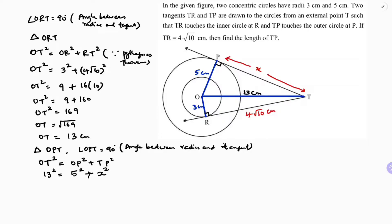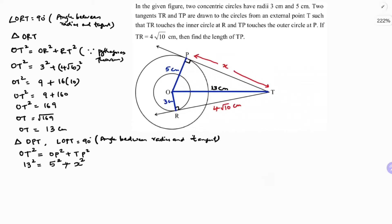So now if I simplify this, 13² = 5² + x². So 169 = 25 + x². 169 - 25 = x². 144 = x².